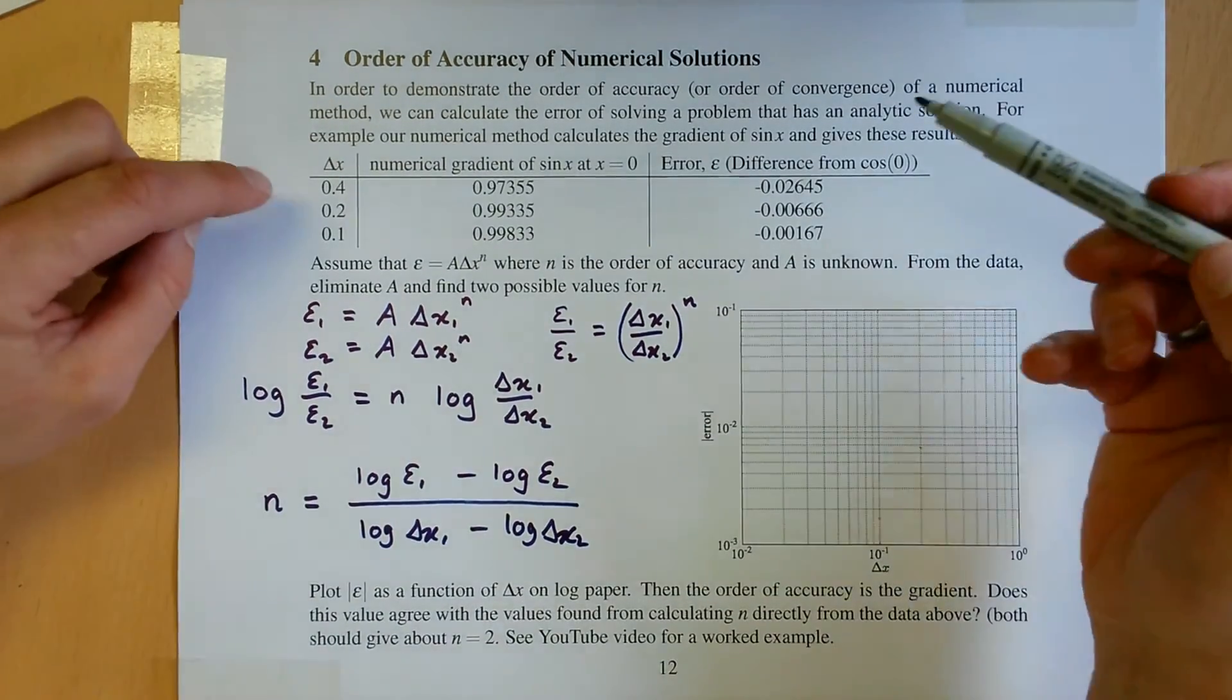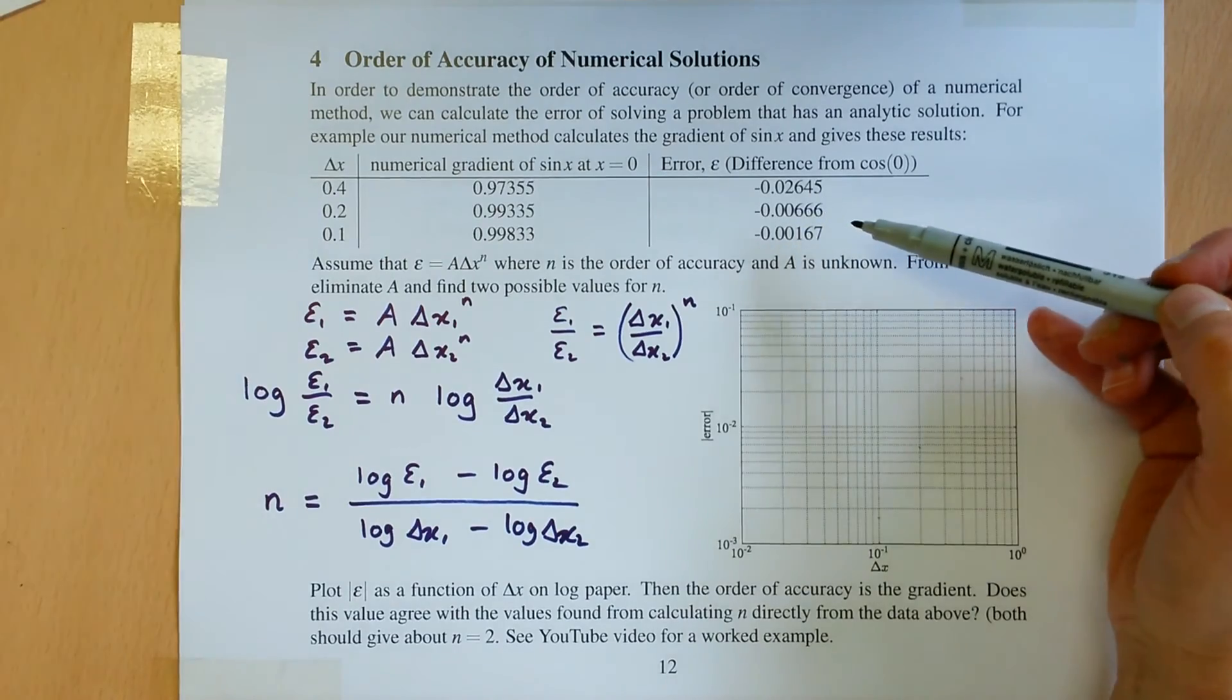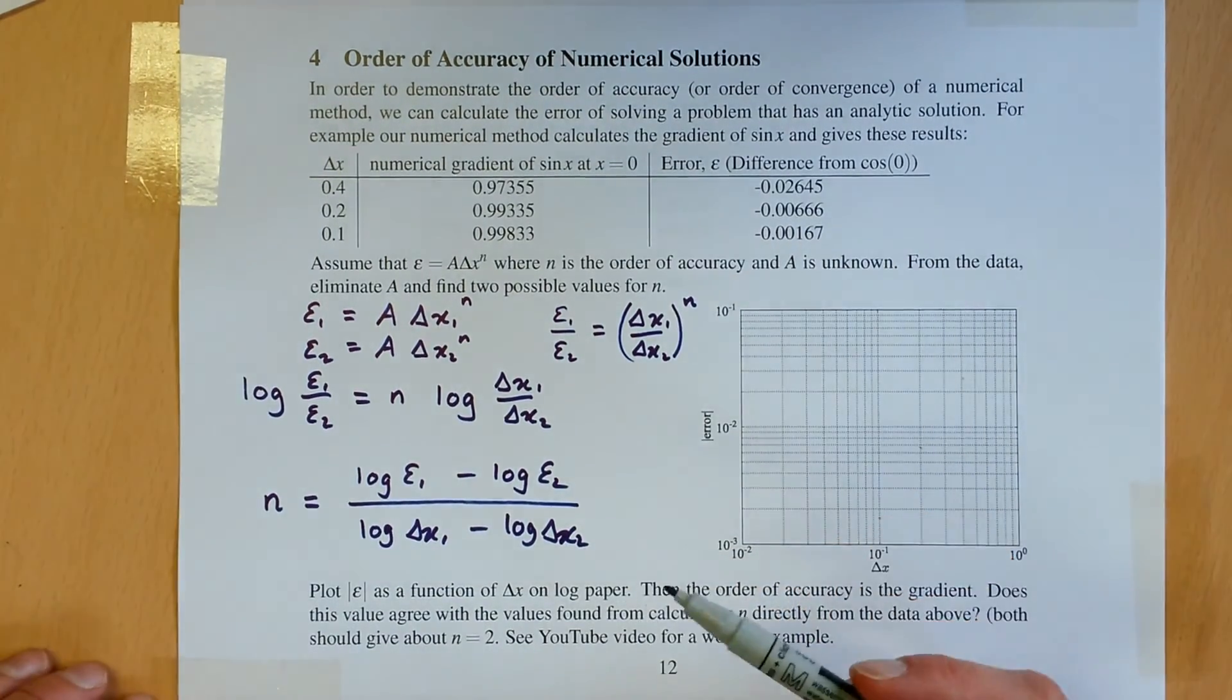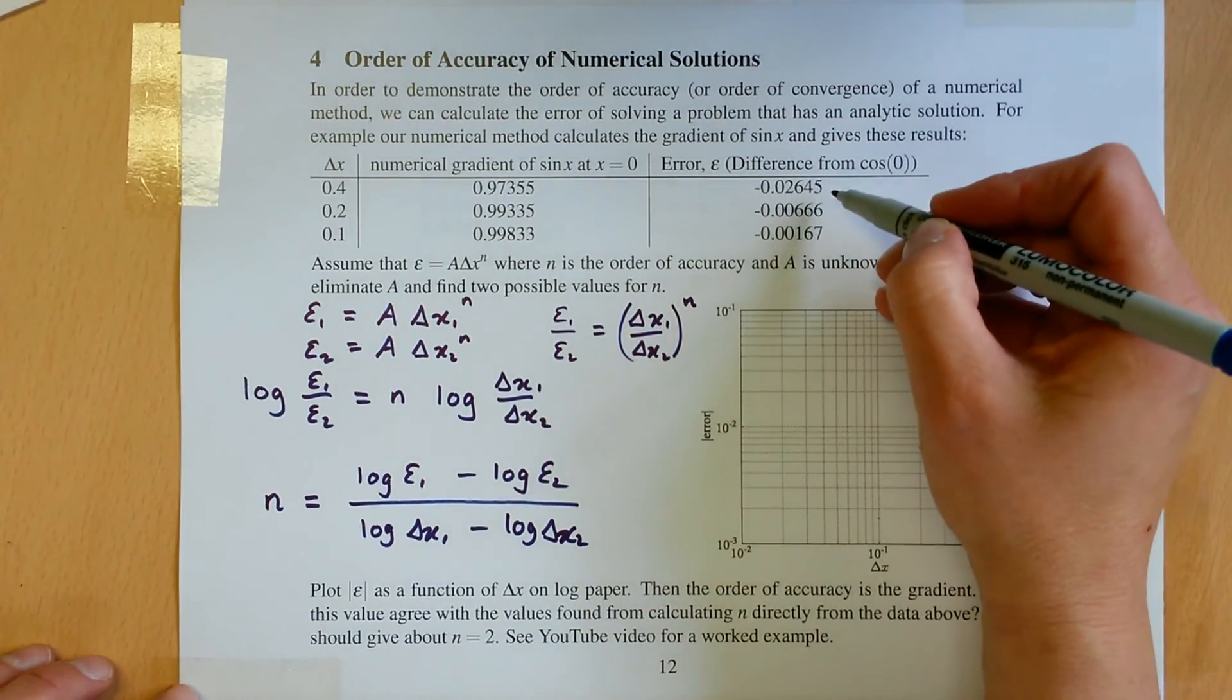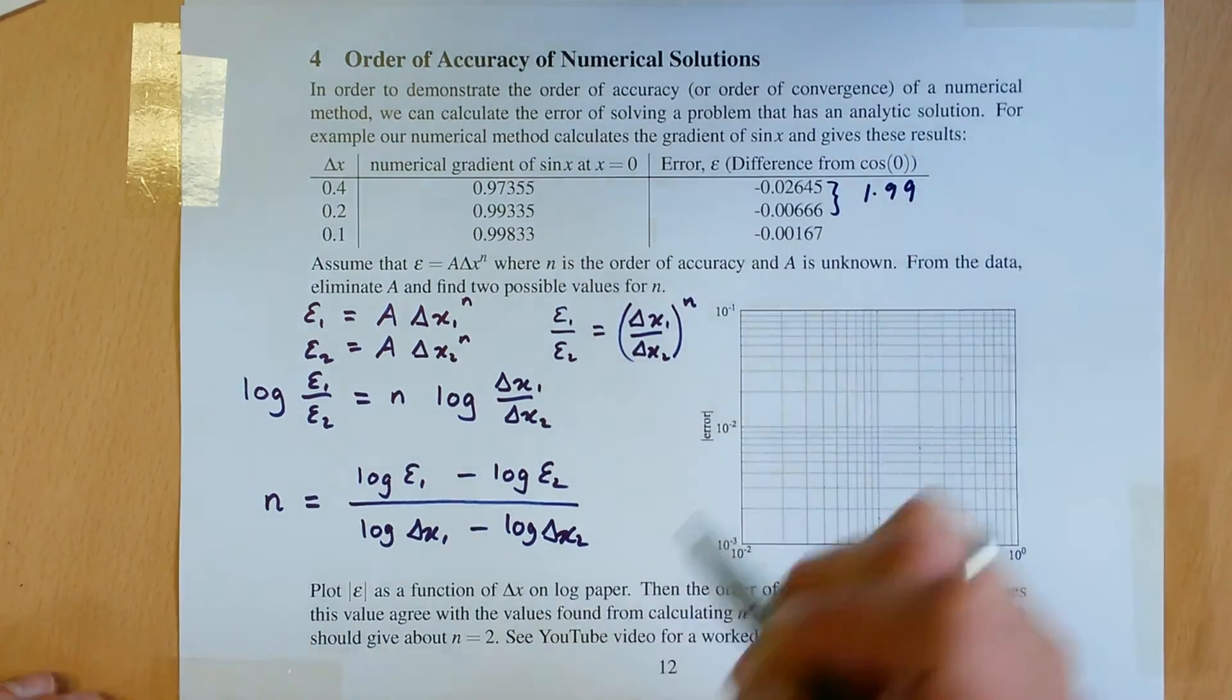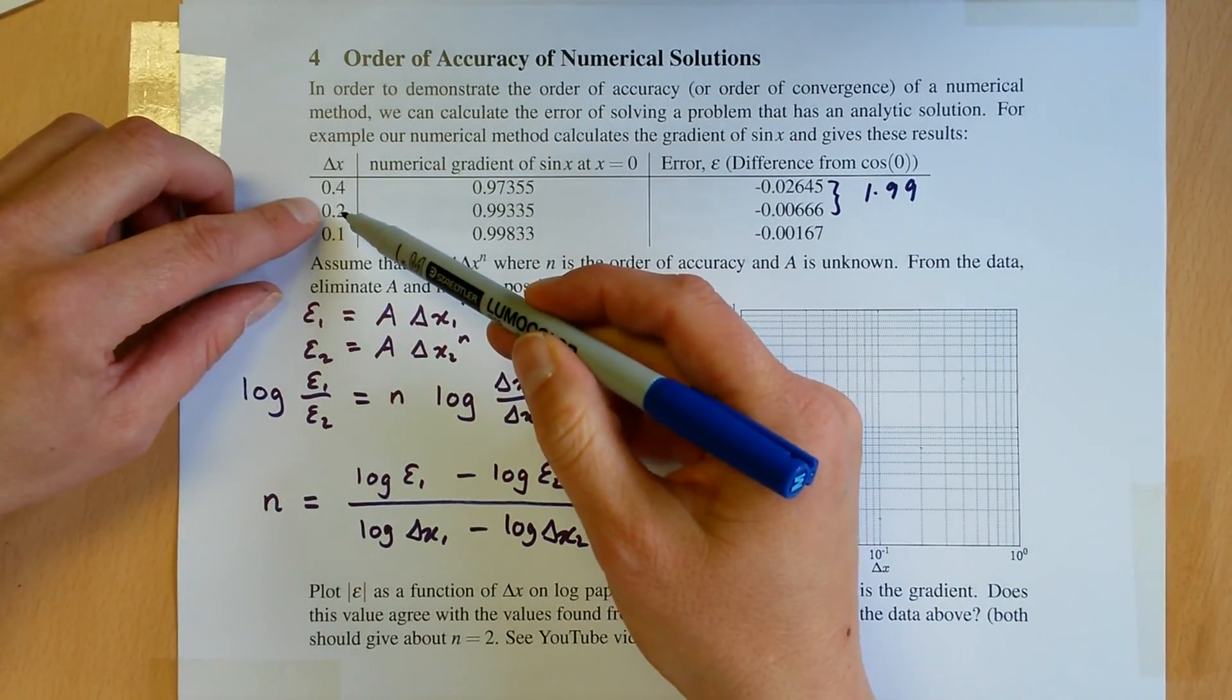So now I can assume that that's delta x1 and that's delta x2, epsilon 1 and epsilon 2. I can plug some numbers into here and I will get, so between these two, n equals 1.99. That's close to 2. And if I use these two values for epsilon 1...